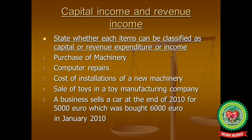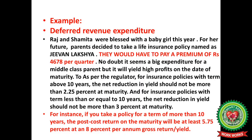We can now classify items as capital or revenue. Purchase of machinery is capital in nature; computer repairs are revenue expenditure; cost of installation of new machinery is again capital expenditure. Sale of toys in a toy manufacturing company is revenue in nature. A business that sells a car at the end of 2010 for €5,000, which was bought for €6,000 in January 2010, records a capital loss. These classifications follow from the principles of distinguishing capital and revenue items.